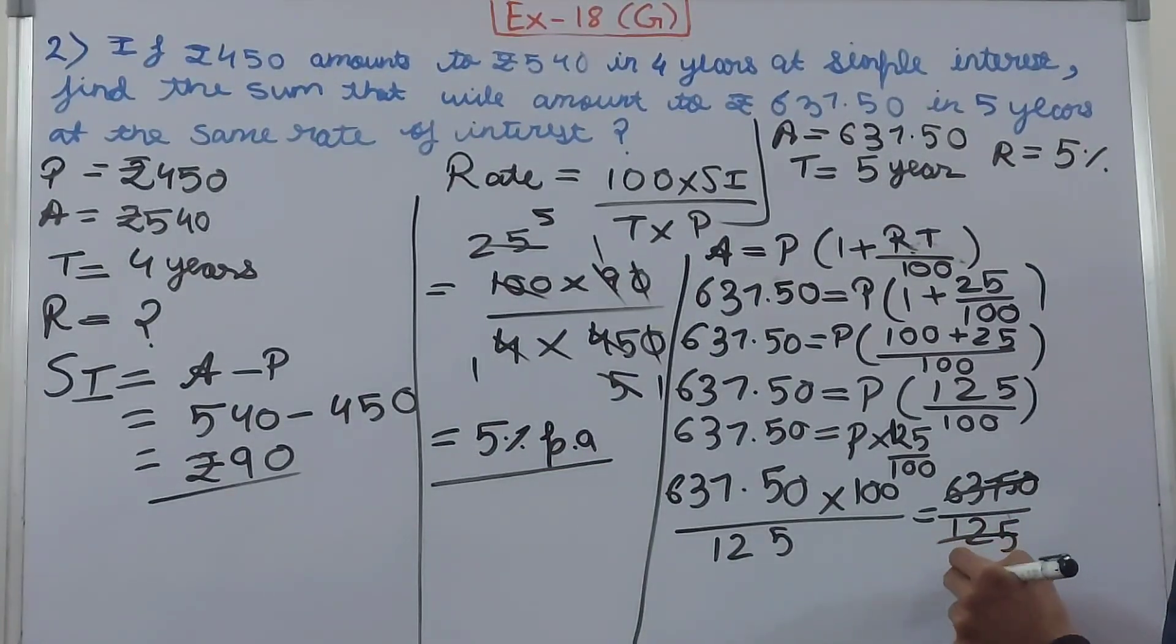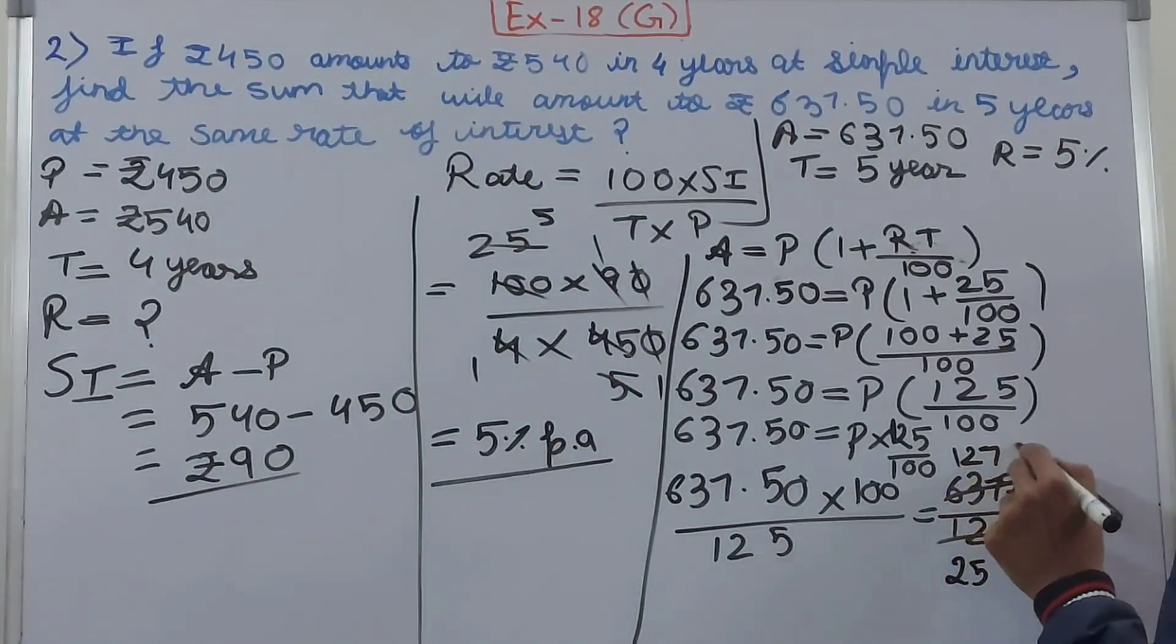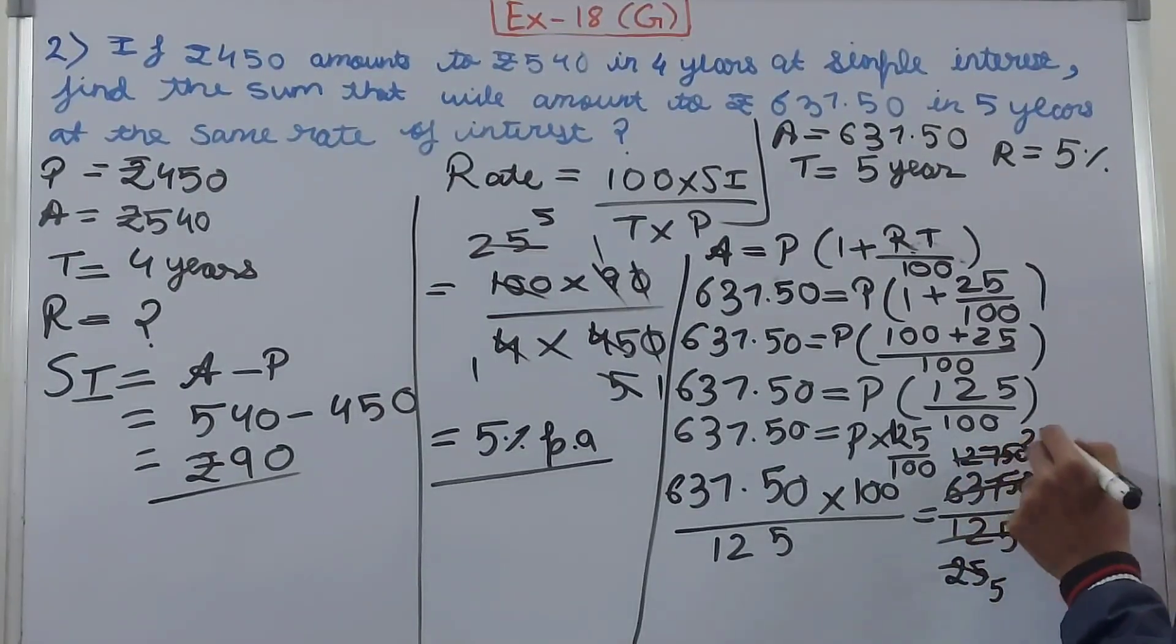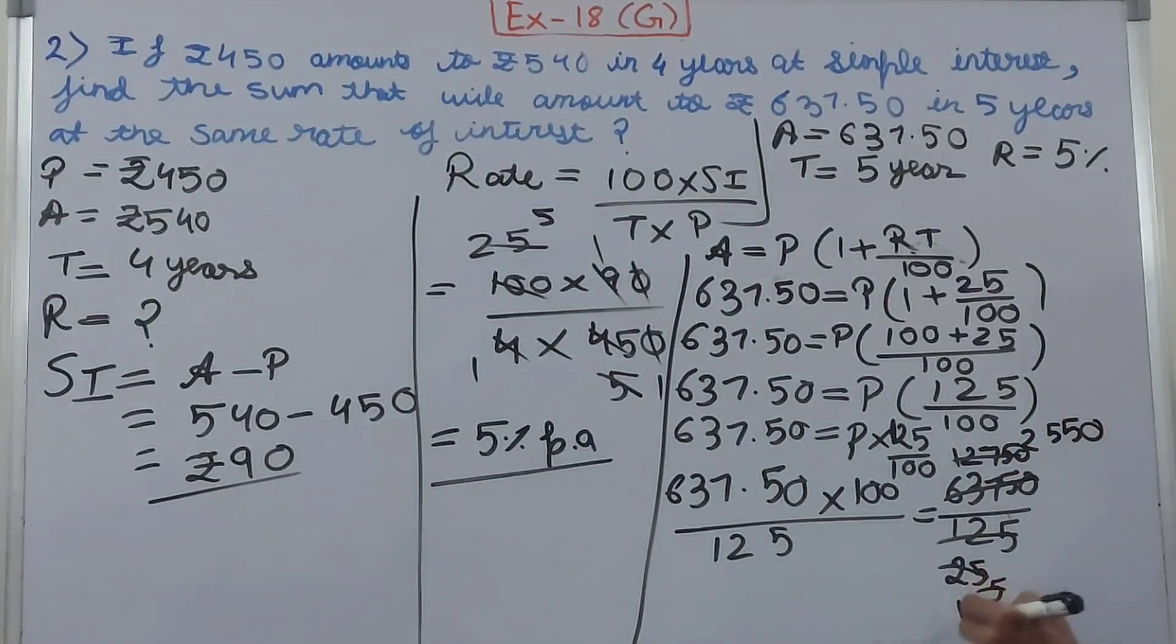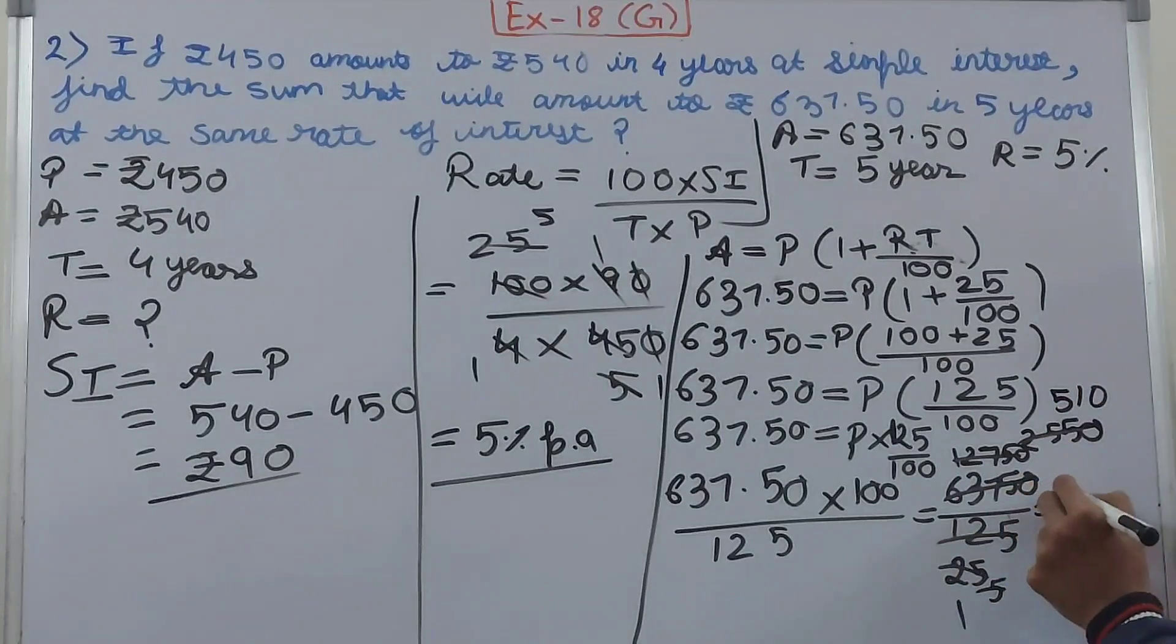So 2, 5, 1, 2, 7, 5, 5, 5, 0. Again I'll cancel this, so 5 and this goes to 5, 5, 5, 0. Again 5 and 25, so 510. So at last we get ₹510.